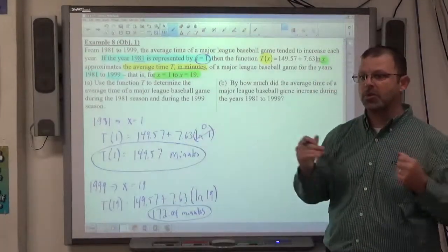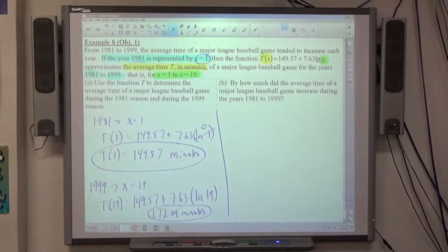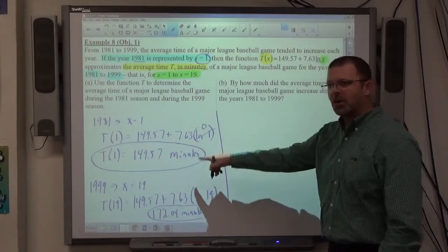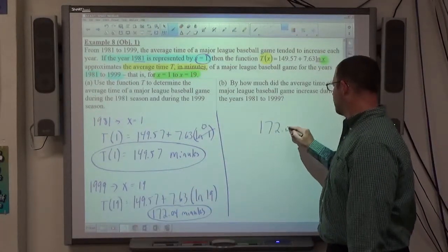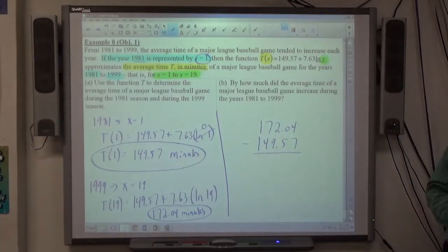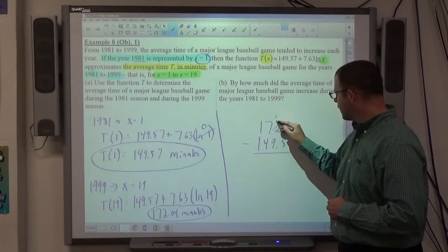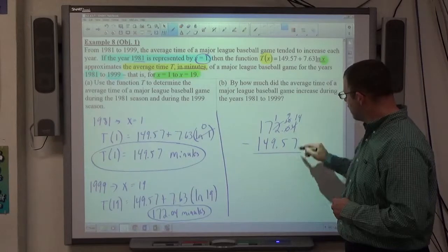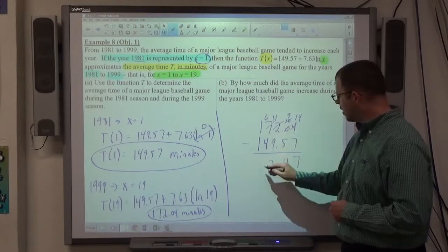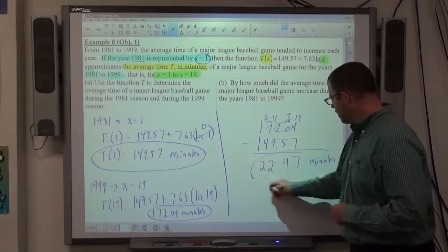Evaluate T when X equals these numbers. Here's a function. Here's what T and X represent. It says, by how much did the average time of Major League Baseball game increase during the years? How do we figure that out? Just subtract them. We know what the times are, so we just subtract. So 172.04 minus 149.57. Sometimes pre-calc is just basic math. It's just a matter of understanding what you've found and how to work with that. I can't subtract 4 and 7, so I've got to borrow from here to make that a 1 to make this a 10. So I can borrow from that to make that a 9 and that a 14. 14 minus 7 is 7. 9 minus 5 is 4. I've got to borrow again here. 11 minus 9 is 2. 6 minus 4 is 2. And 1 minus 1 is 0. So 22.47 minutes is the amount of increase in time between the two games.